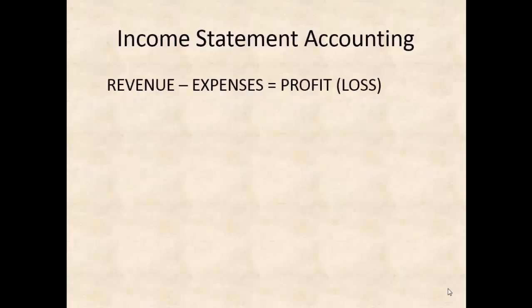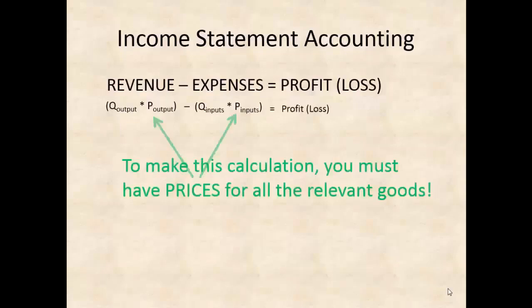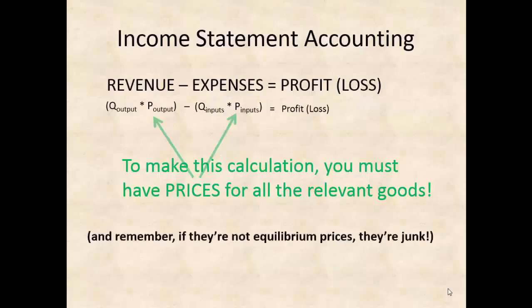What we need to recognize is that you cannot do income statement accounting without having prices for both the product—the output—and the inputs, the expenses. Price is a crucial feature of the calculation of both revenue and expense. Only when we have prices for all goods throughout the economy can entrepreneurs really do this function of calculating or estimating profit and loss. If these are not equilibrium prices, they're not telling the truth, they're not coordinating our activities, they're not balancing quantity supplied and demanded—so they're worthless.